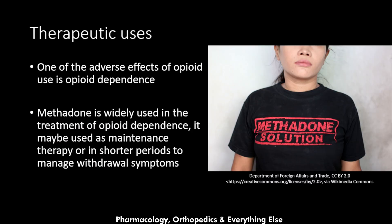Now let's talk about the therapeutic uses of methadone. One adverse effect of opioid use is opioid dependence — when a patient takes an opioid recurrently, this leads to physiological adaptation, and when the patient stops the medication this leads to withdrawal syndrome and craving for that specific opioid. Methadone is widely used in the treatment of opioid dependence, either as maintenance therapy (MMT) or in shorter periods to manage withdrawal symptoms.